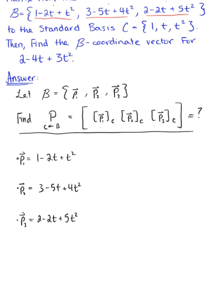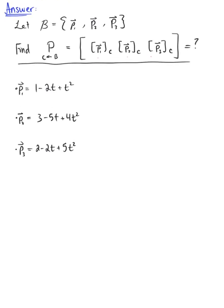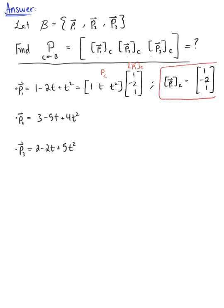We convert these vector equations to matrix equation form. We have the standard basis C — that is, {1, t, t squared} — multiplied by the column vector of coefficients 1, negative 2, 1. Writing it this way, we can see the change of coordinates matrix for standard basis C multiplied by the coordinates of p sub 1 relative to C. So the coordinates of p sub 1 relative to C is the column vector [1, −2, 1], which is the first column of the change of coordinates matrix.